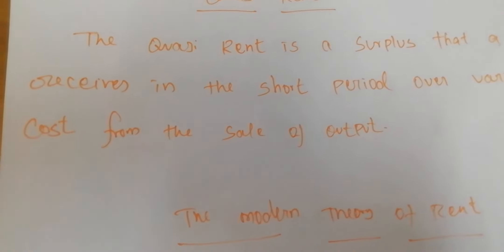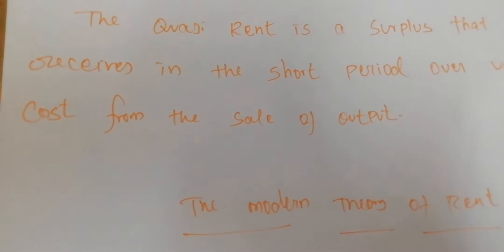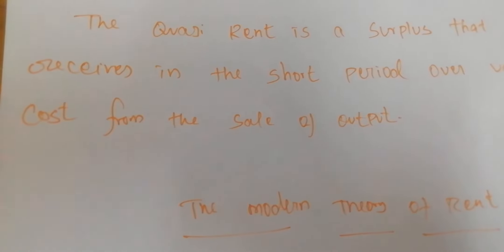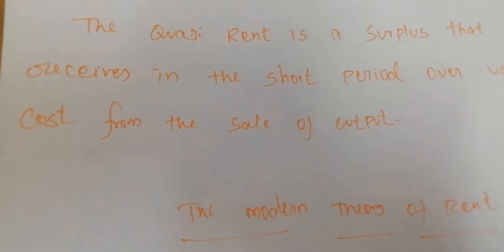The supply of land is fixed forever — the productivity of land is always fixed. But the supply of man-made appliances is fixed for a short period only. Within the short period, we can increase the supply of a commodity by using machinery and tools, but in the long run, quasi rent disappears.